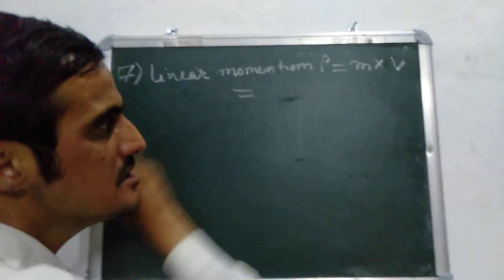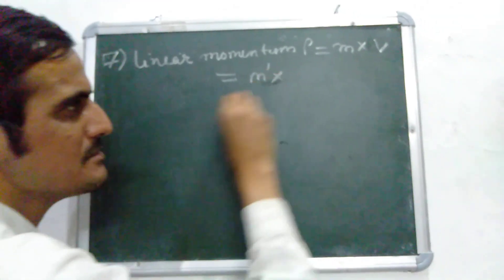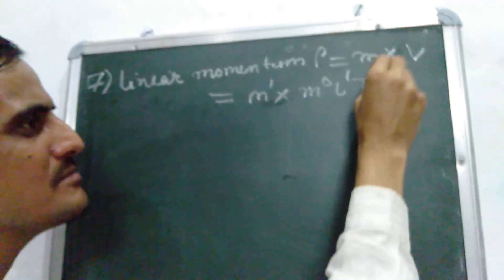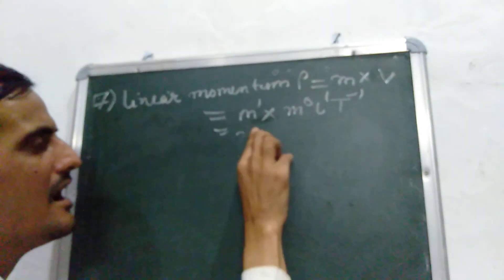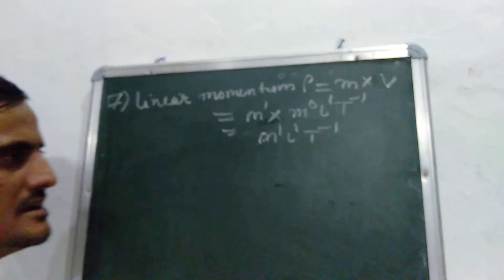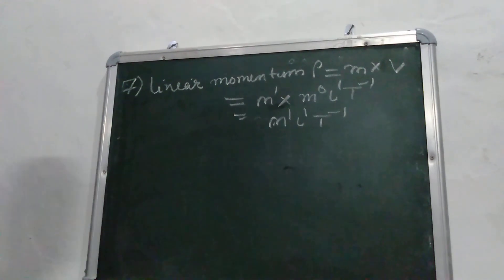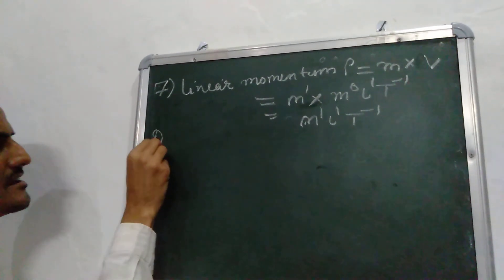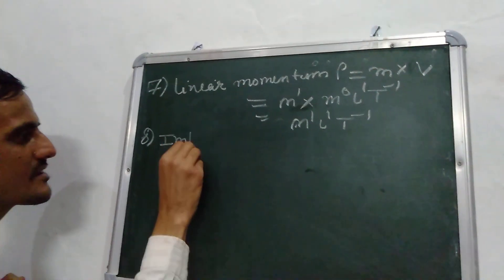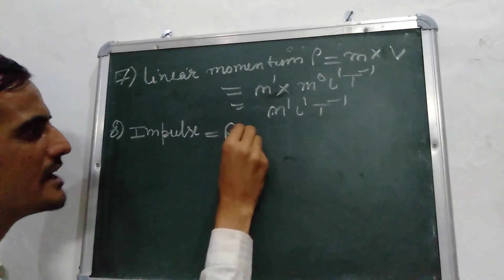What is the dimensional formula of mass? It is M1. And what is the dimensional formula of velocity? It is M0 L1 T-1. By solving it, it comes out to be M1 L1 T-1. This is the dimensional formula of linear momentum: mass into velocity. Next is impulse — the formula of impulse is force into time.